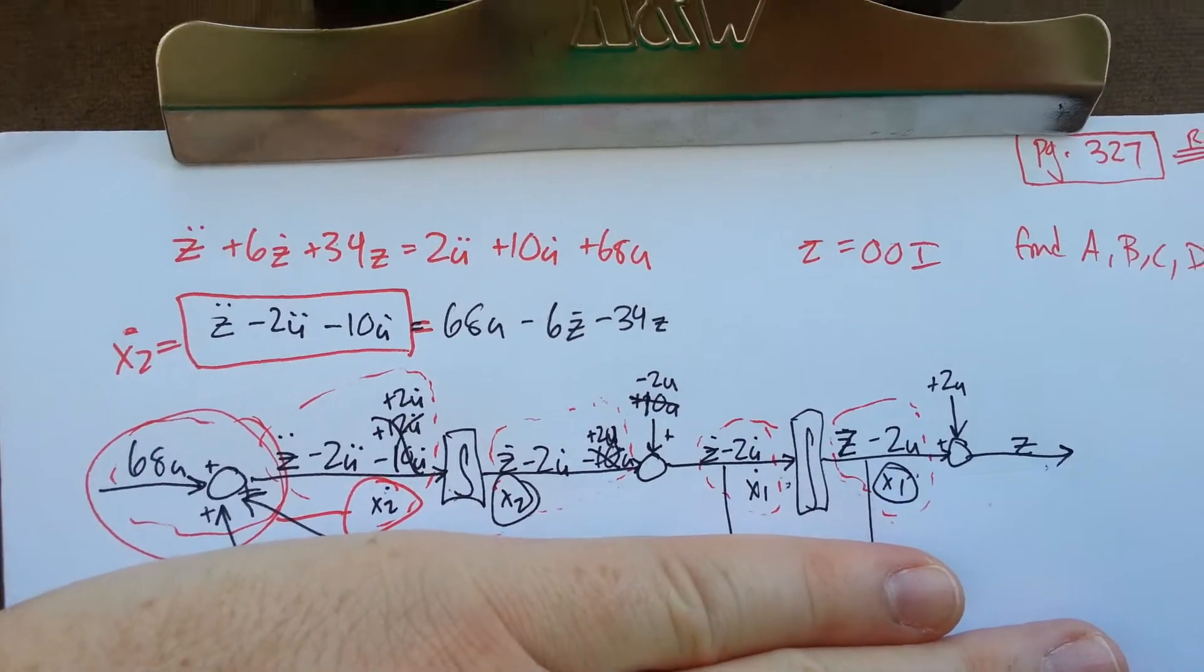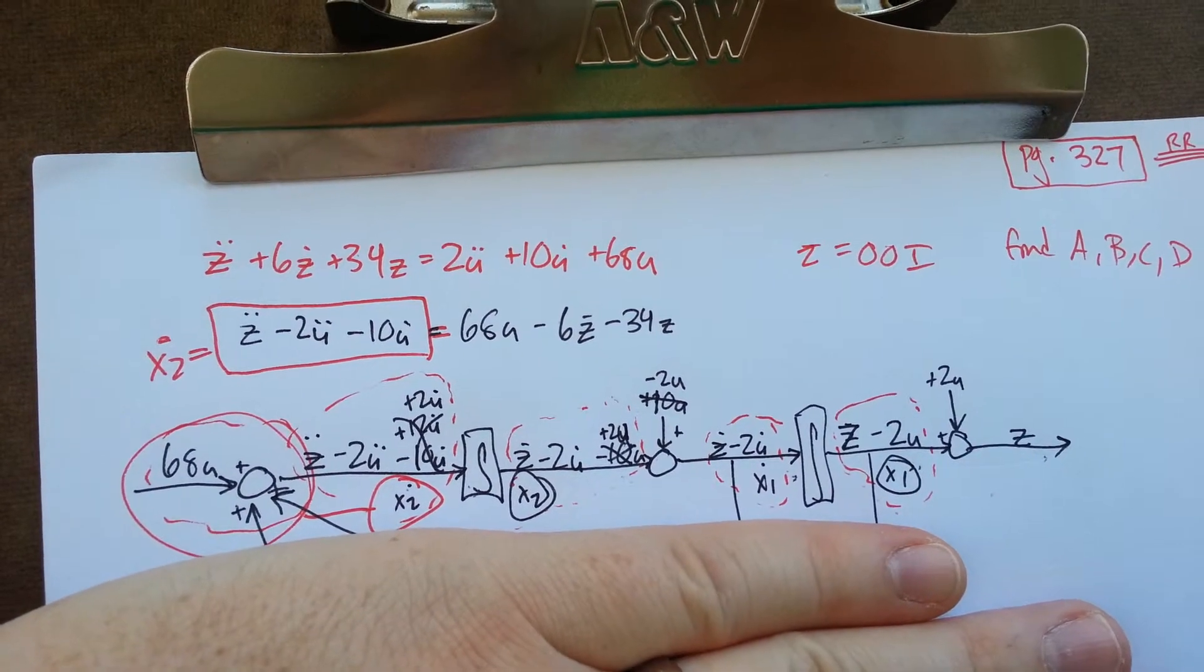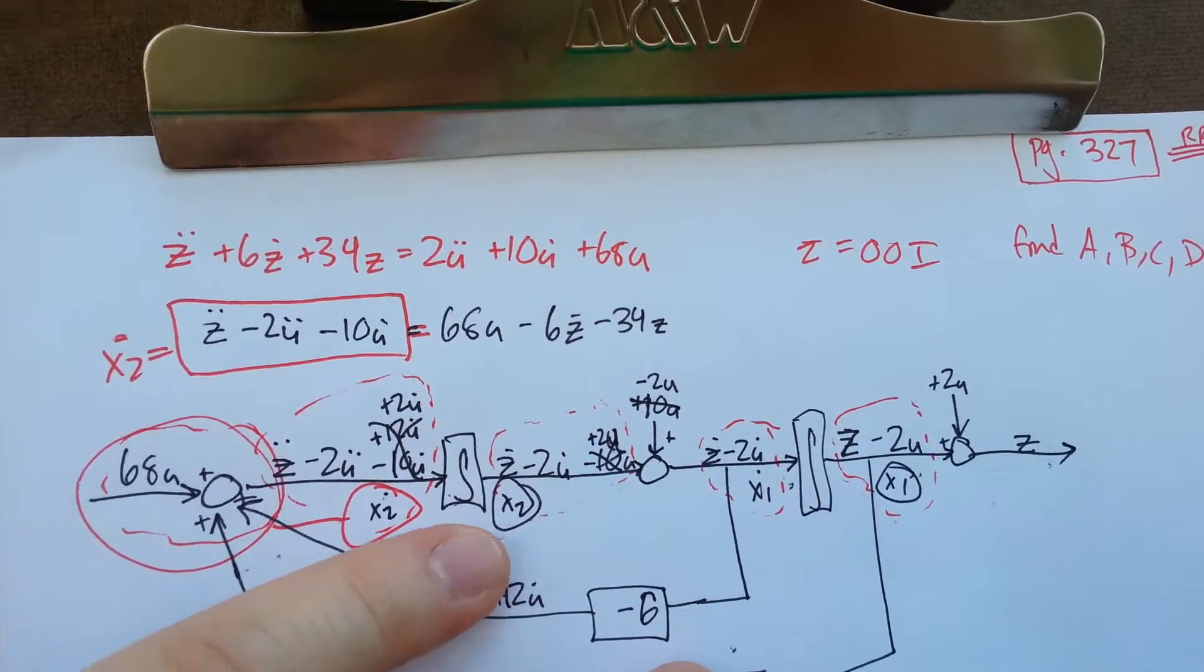At that point we can identify that after each integrand is our state variable. This is x1 and there's your x2.